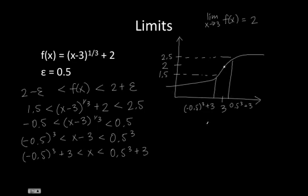So we know that 3 plus 0.5 to the third minus 3, this distance is equal to 0.5 to the third, which is equal to 0.125.